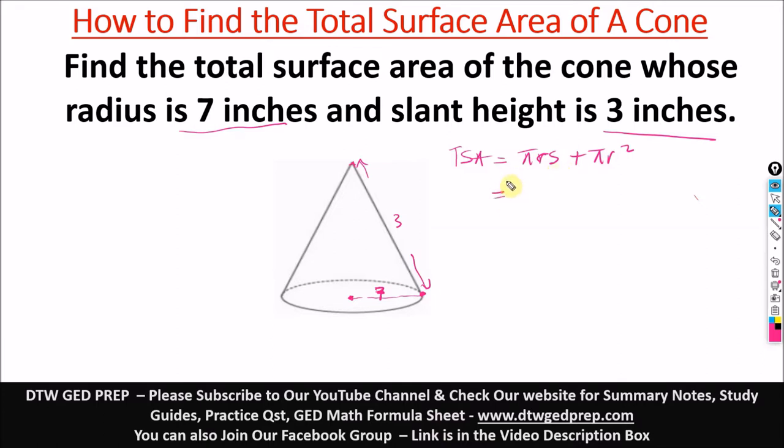So we're putting our value. Definitely we'll be giving our pi as 3.14. So we have 3.14 times our radius is 7 times our slant height is 3 inches plus our pi here is 3.14 times our radius is 7 squared.